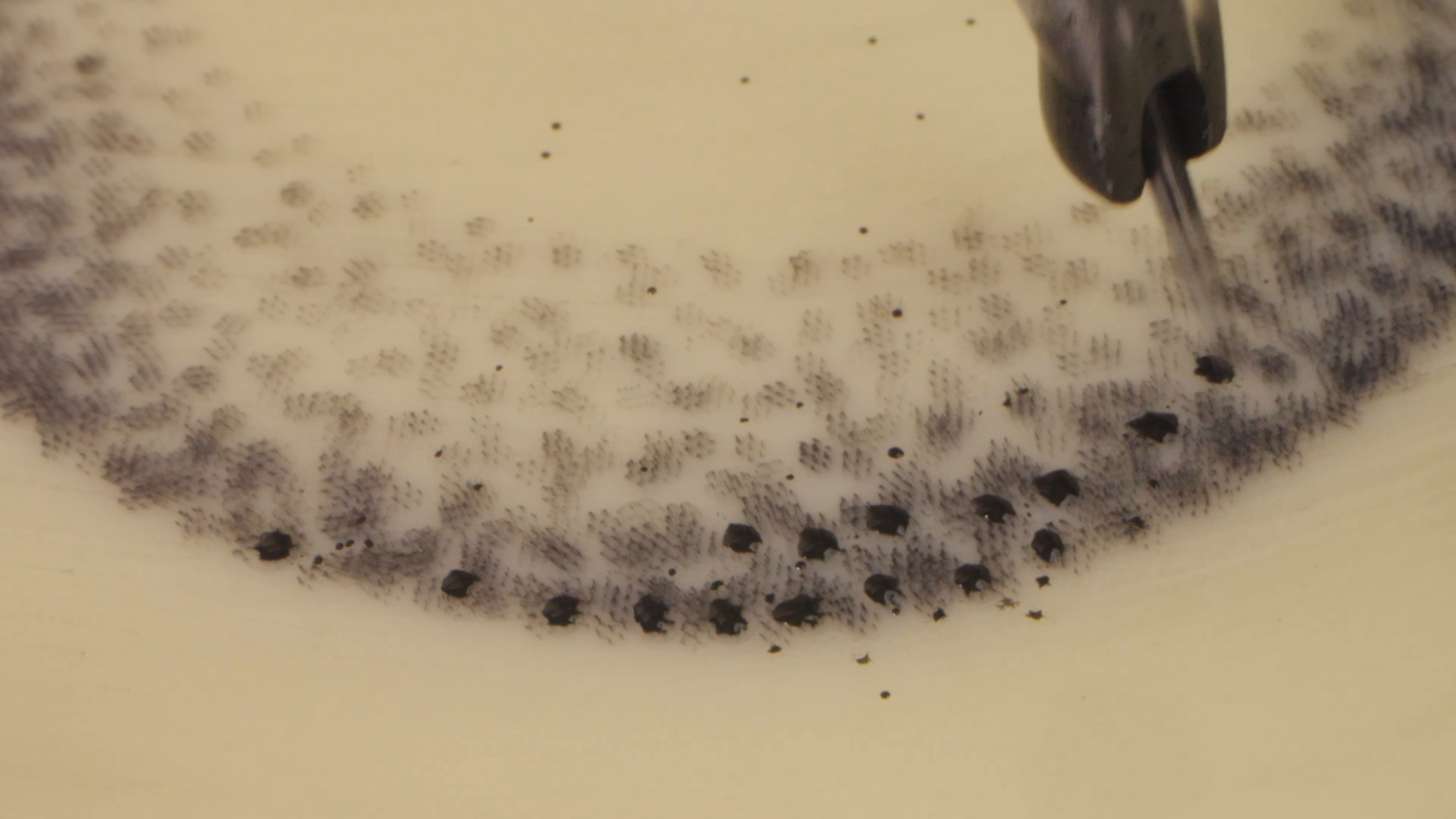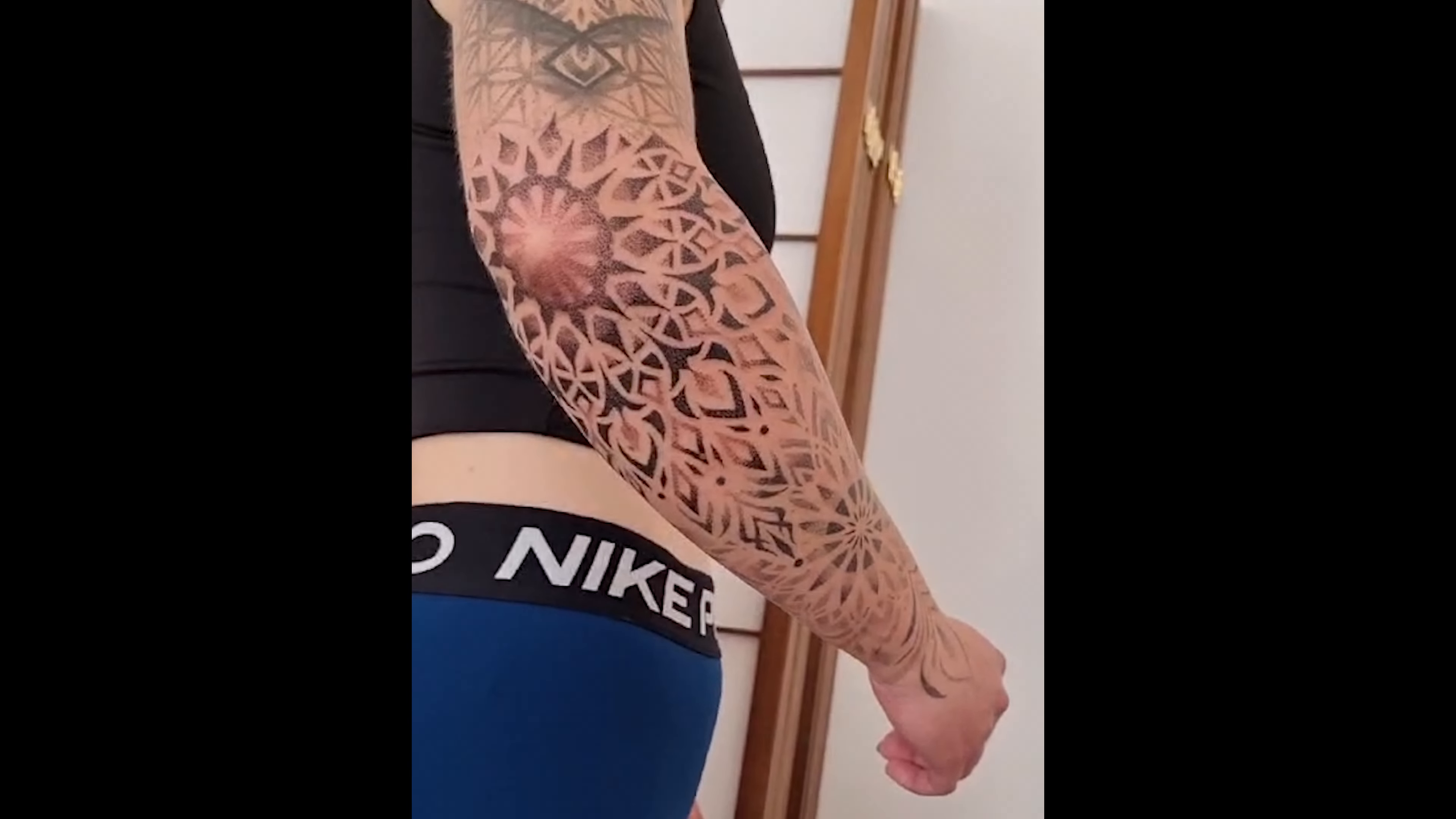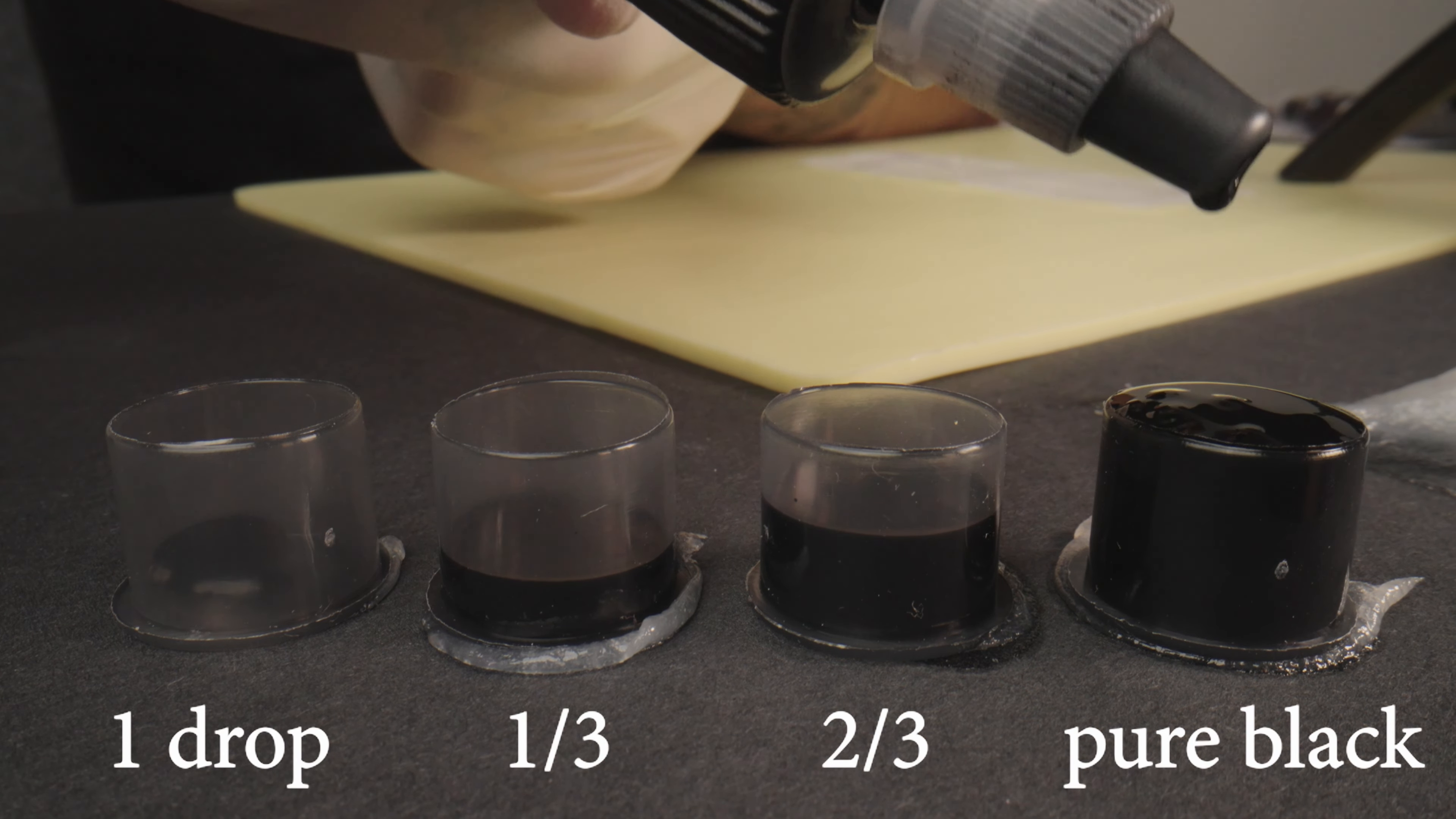Dotwork technique. I've inked countless tattoos like this one and today I'm going to show you how I do it. First I create a grayscale from dark to light and fill the rest with sterile water.